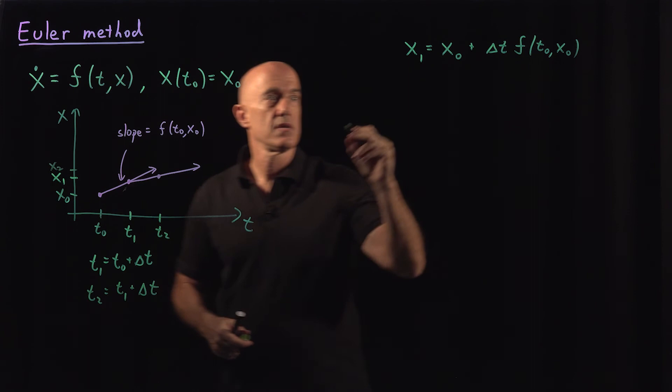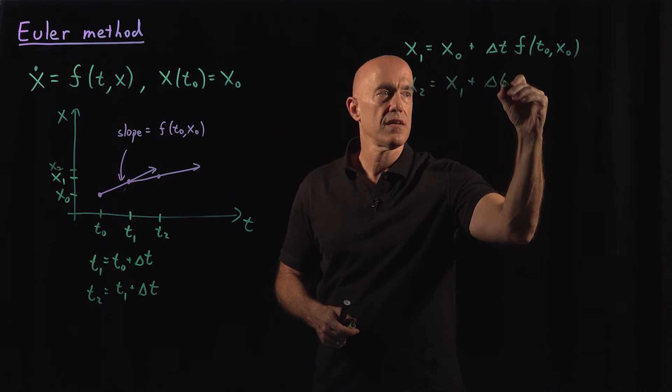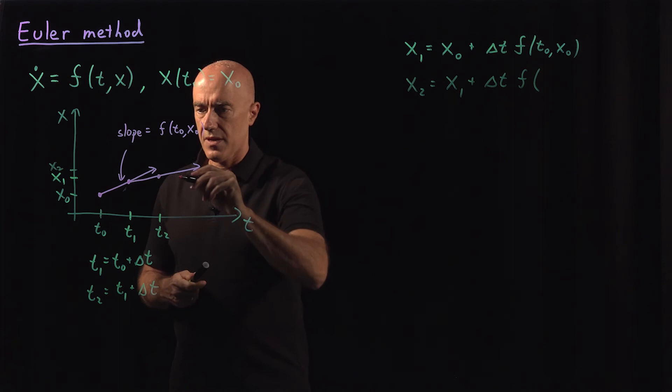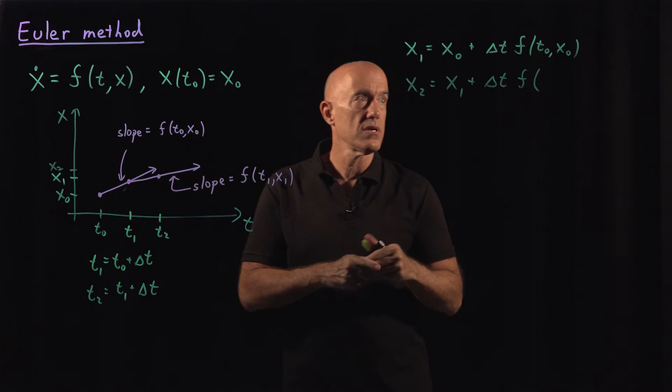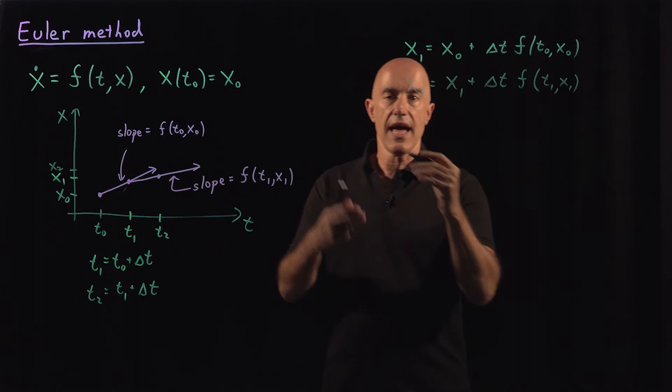And marching along the tangent line will get us here. And then that value is slightly higher here, that will be our x2. So x2 is equal to x1 plus delta t. And then the value of f, the slope here of this line will be f of t1, x1. Both values, t1 and x1 are known. So this will be f of t1, x1.